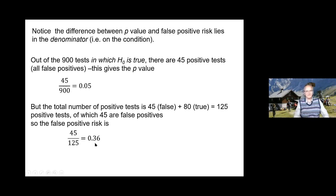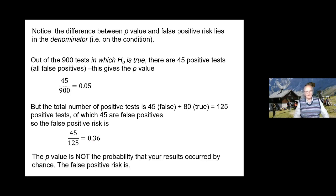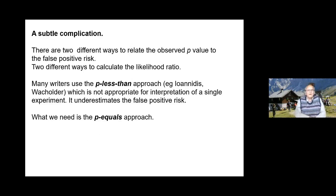Now we have to come to a slightly subtle complication, which has been around since the 1930s and was made very explicit by Dennis Lindley in the 1950s. It is unknown to most people, which is very weird. The point is that there are two different ways in which we can calculate the likelihood ratio, and therefore two different ways of getting the false positive risk.